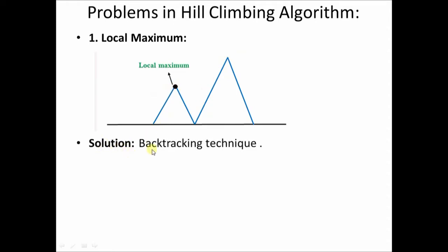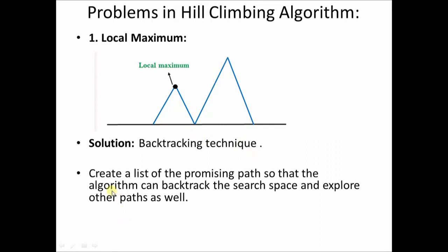The solution to local maxima is the backtracking technique. We maintain a list of all the nodes traversed to reach the current location. For example, starting from an initial node and traversing through several nodes to reach the local maxima, we can backtrack using that list to the original place and try a different path, potentially reaching the actual solution or global maxima. So we create a list of promising paths, enabling the algorithm to backtrack and explore other paths. This is an improvisation to hill climbing where we enable a backtracking procedure.